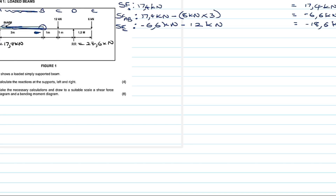There is nothing between C and D, so we move straight to shear force at point D. At point D we have the right reaction acting upwards, which is 24.6 kilonewtons. Shear force at D = minus 18.6 plus 24.6 = positive 6 kilonewtons.